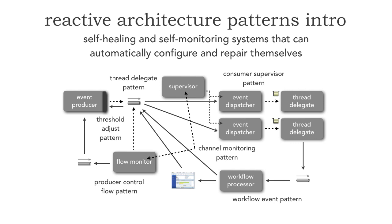Finally, the channel monitoring pattern is applied across so many of these, sitting on top of them so that we can be self-aware and programmatically monitor what's happening in our systems. In future lessons, I'm going to be talking about each of these patterns, starting with the channel monitoring pattern, which forms the basis for all the other patterns to be self-aware. This is what reactive architecture gives us — something that looks futuristic, but there's no special framework or tools needed to implement these, just plain API and plain messaging.